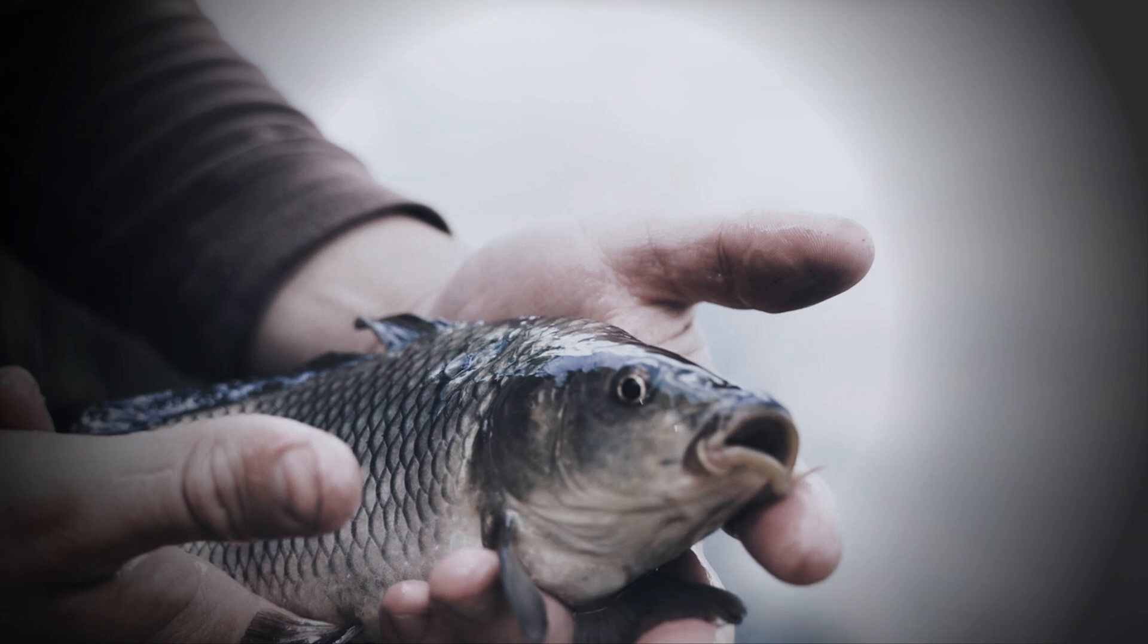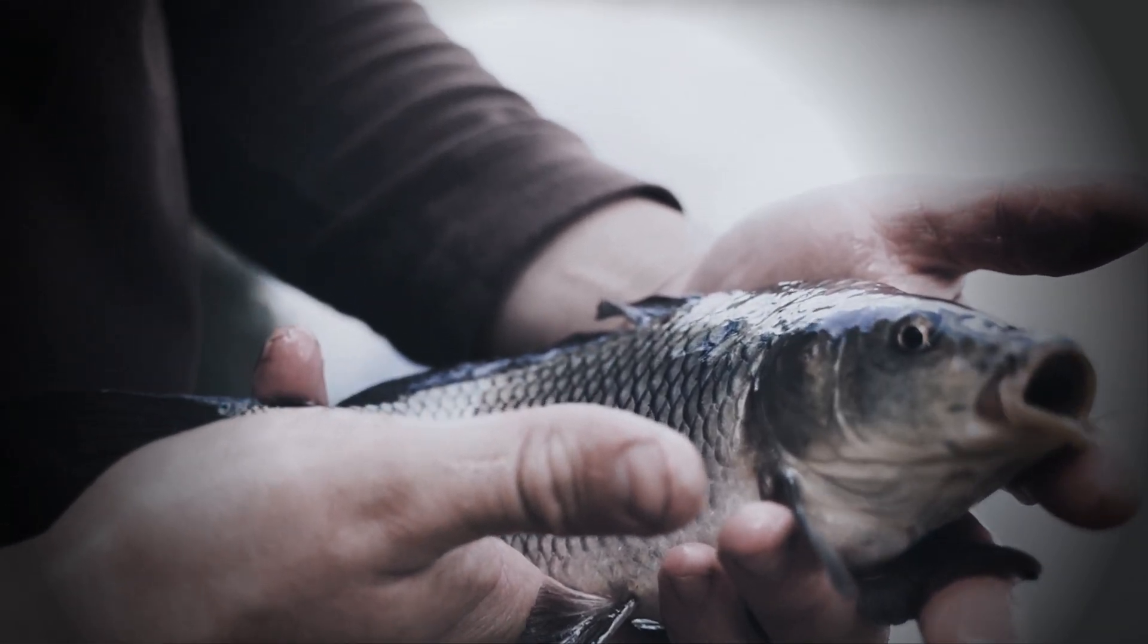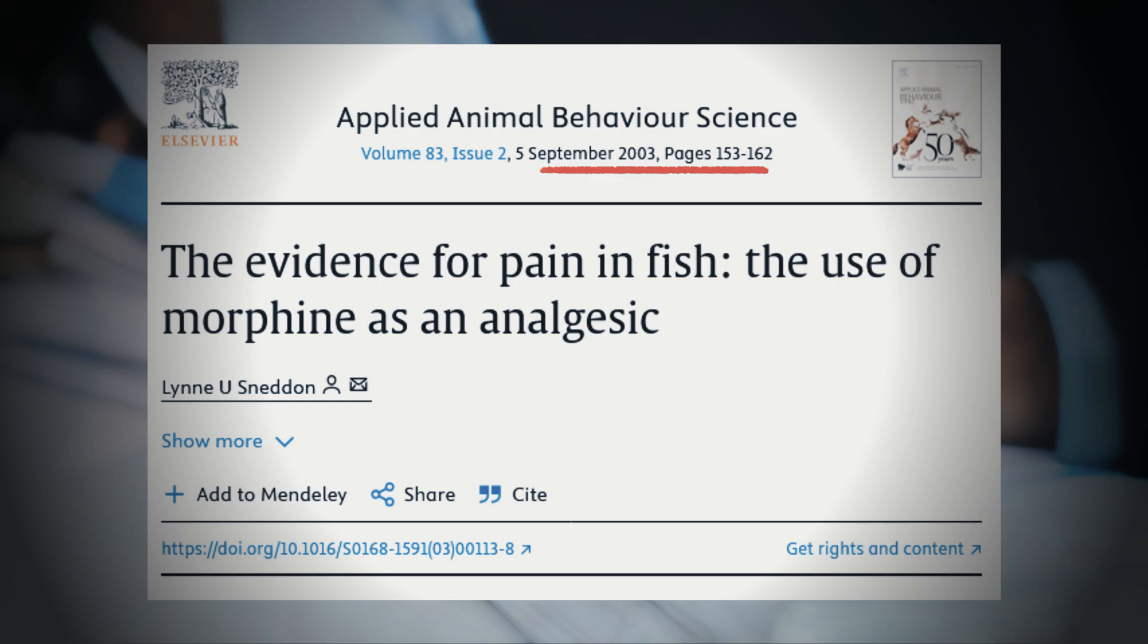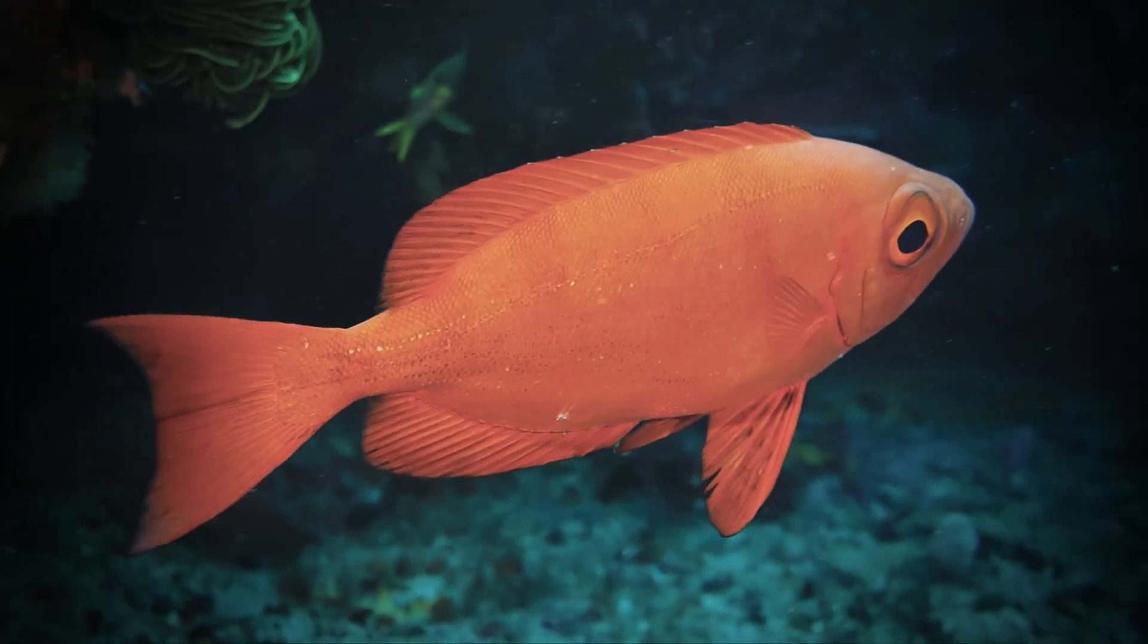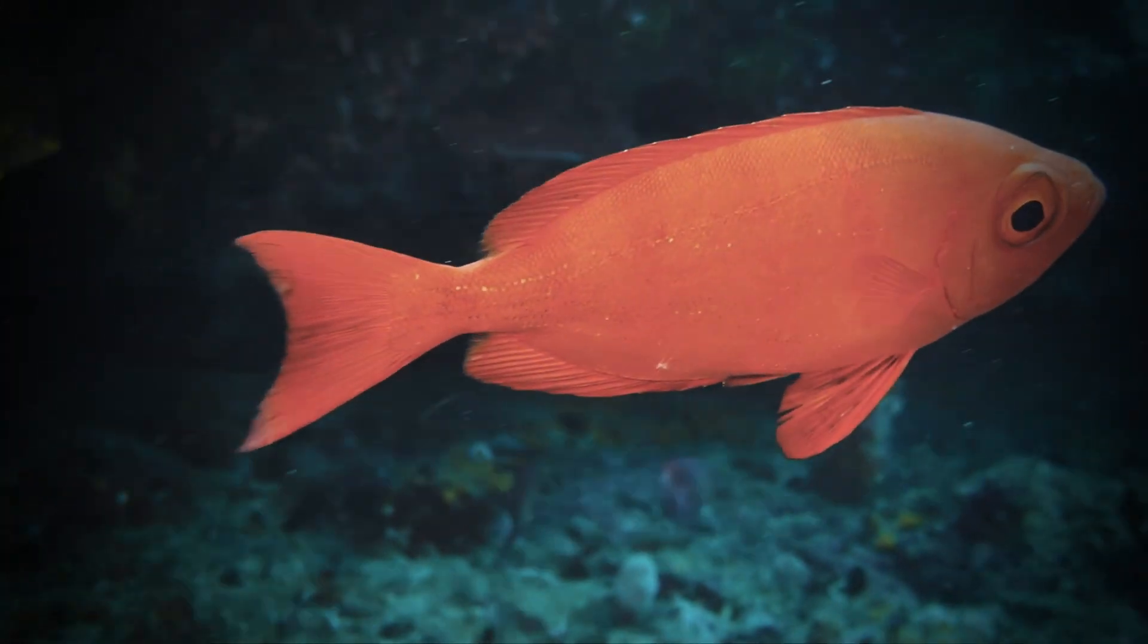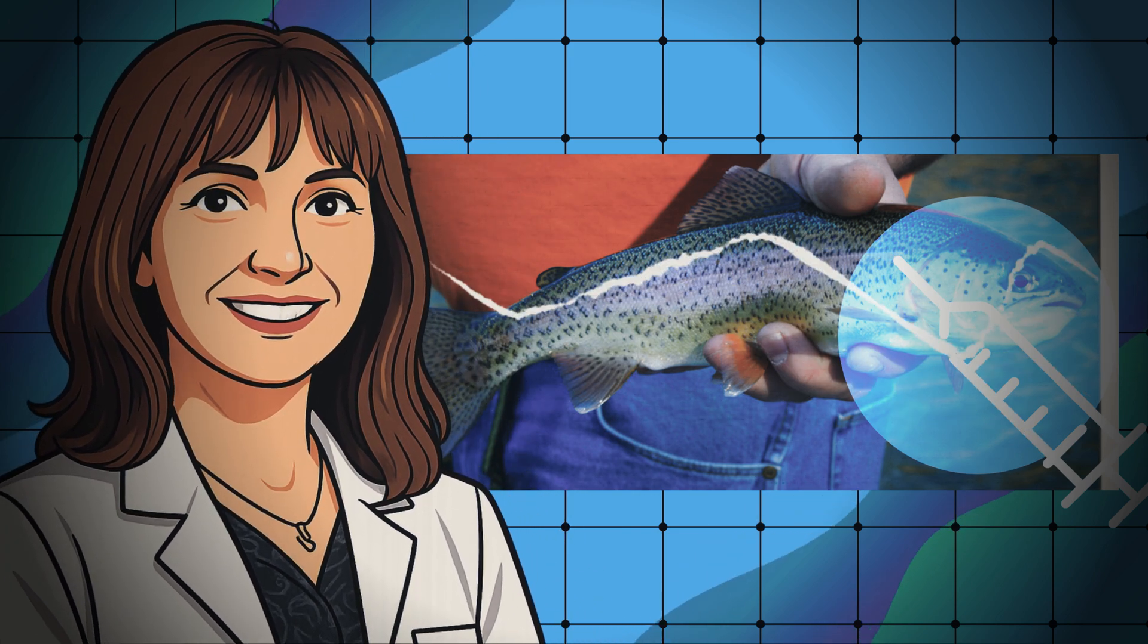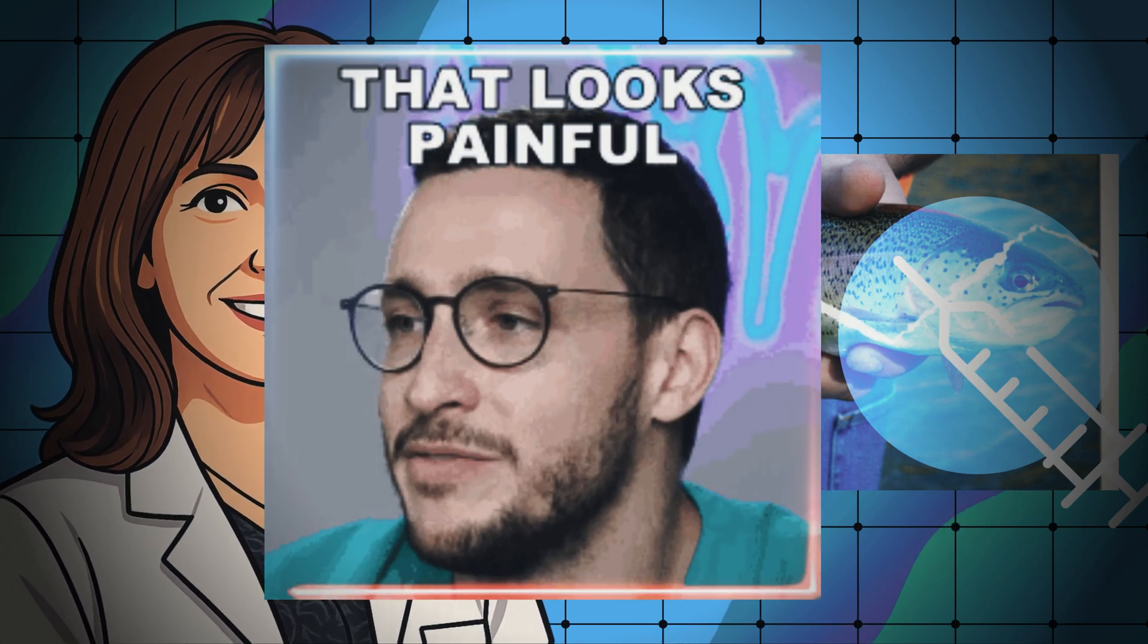But if fish can't feel pain, why do they act like they do? Let's look at another research, from 2003. To study whether fish don't just react from reflex but actually feel the pain, Dr. Lynn Sneddon has injected a nauseous chemical into the lips of rainbow trout. What happened next?